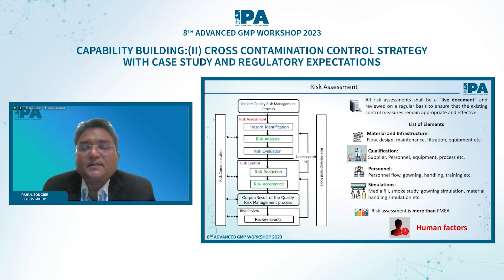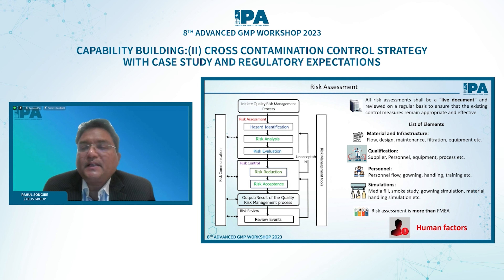This is the risk management flowchart from ICH Q9. Most important is that risk assessment is a live document — it is not something prepared on a one-time basis and then kept aside. It has to be updated on a regular basis as and when we get new knowledge about any risk. The elements of risk assessment include material and infrastructure, flow design, maintenance, filtration system, and equipment. In qualification: supplier qualification, personnel, equipment process shall be considered. Then personnel flow, gowning, handling, training, and so on. For sterile process simulation: media fill, smoke study, gowning qualification, and material handling simulation. And as I want to emphasize: risk assessment is more than a formality, and human factors play a very important role in the cross-contamination control strategy.